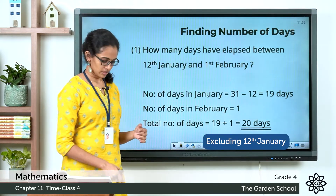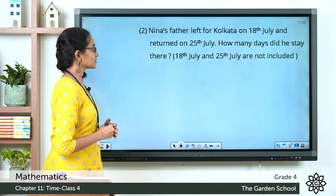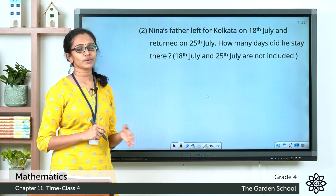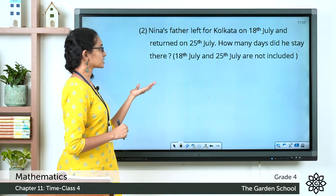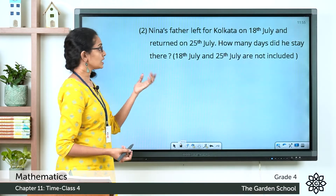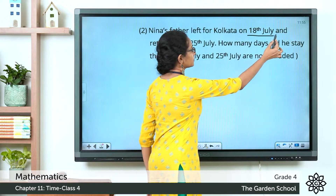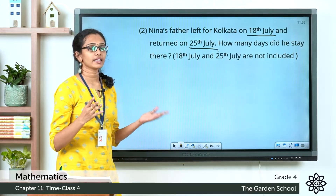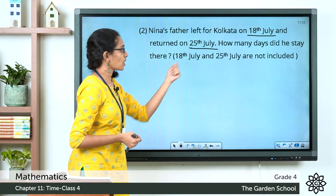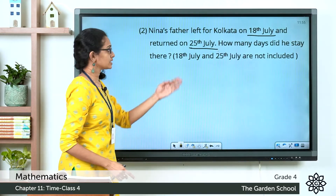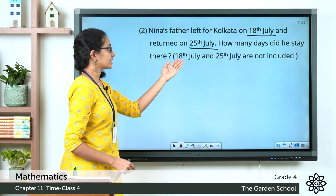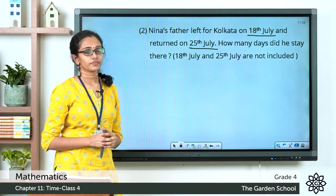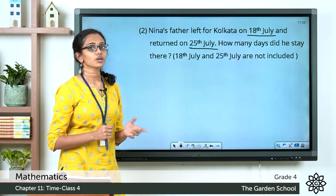I hope this is clear to you. Now the next example: Nina's father left for Kolkata on 18th July and returned on 25th July. How many days did he stay there? Here it is mentioned that you have to exclude the 18th of July and the 25th of July, and then calculate the number of days he stayed in Kolkata.